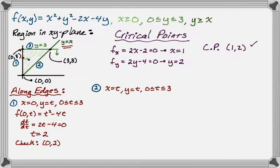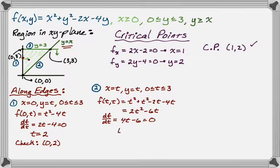Alright, so we'll parameterize our surface to get a trace. So f(t, t) is t² + t² - 2t - 4t. So that is 2t² - 6t. Now we want to find df/dt. So we're finding the slope along this trace is 4t - 6. Set that equal to 0. So t = 3/2. And then we know that x and y are both equal to t. So we have another point we're going to check. So 3/2, 3/2.